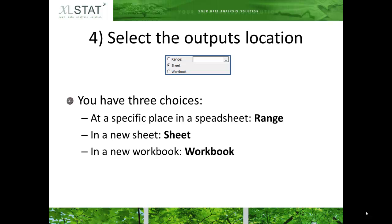Finally, in the General tab you can decide where the analytical results should be displayed. You have three choices: you can place them at a specific place in a spreadsheet — in this case select the option range. The output can be displayed in a new sheet — select the option sheet. The last option enables you to place the results in a new workbook — this option is workbook.